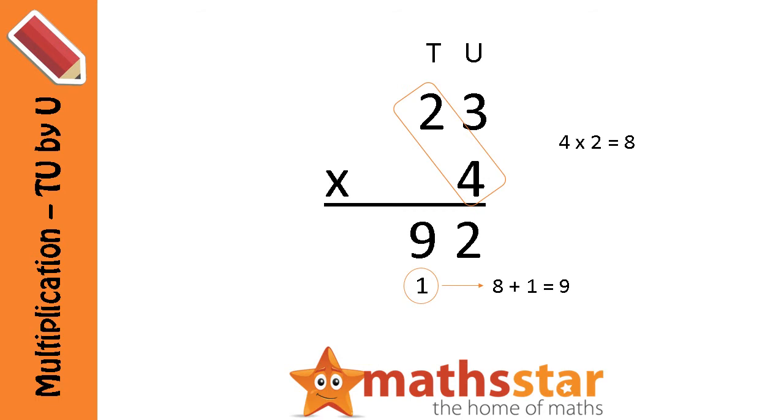So now we have the number 92, which is our answer. So let's do it all together right from the top. 4 times 3 is 12. So we write the 2 and carry the 1 over. Then 4 times 2 equals 8. Add the 1 that we carried over makes 9. Our answer is 92.